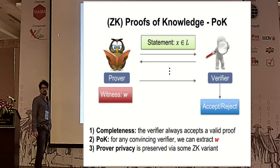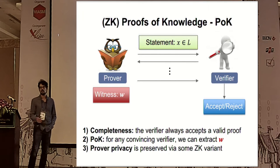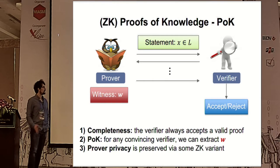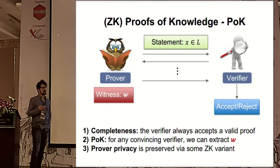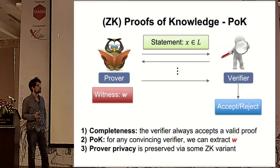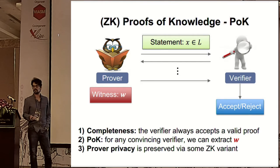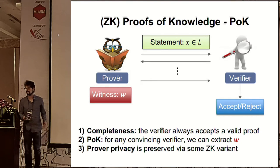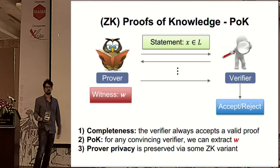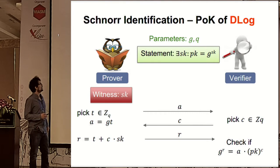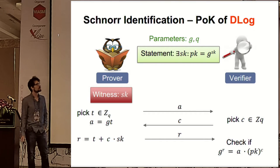In a standard proof of knowledge protocol, a proof of knowledge is an interactive proof where a prover convinces the verifier of the validity of some statement. Completeness ensures honest proofs always verify, and if a prover manages to convince us with some probability, we have a mechanism to extract the witness. In most interesting constructions this is done in a prover-privacy manner — you can hide the code of the prover either via zero knowledge or some relaxation like witness indistinguishability or some other variant.